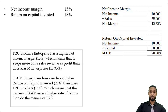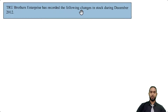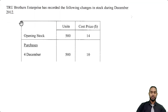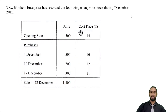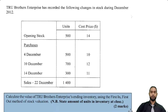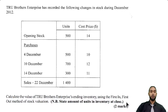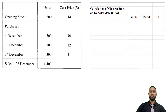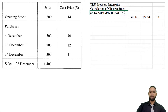There's one more part to this question. True Brothers Enterprise has recorded the following changes in stock during December 2012. We have a little stock table: opening stock 500 units at a cost price of $14 per unit. There are three sets of purchases: 500 at $10, 700 at $12, and 300 at $11. Then we have sales on the 22nd of December of 1,400 units. They want us to calculate the value of ending inventory using the first-in, first-out method, and state the number of units in inventory at close.